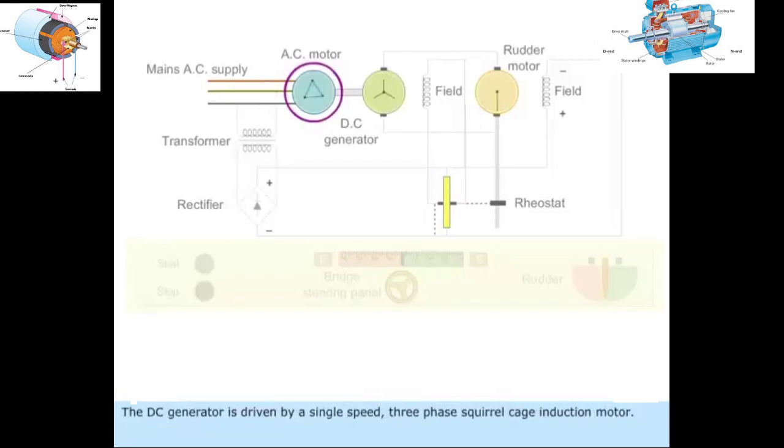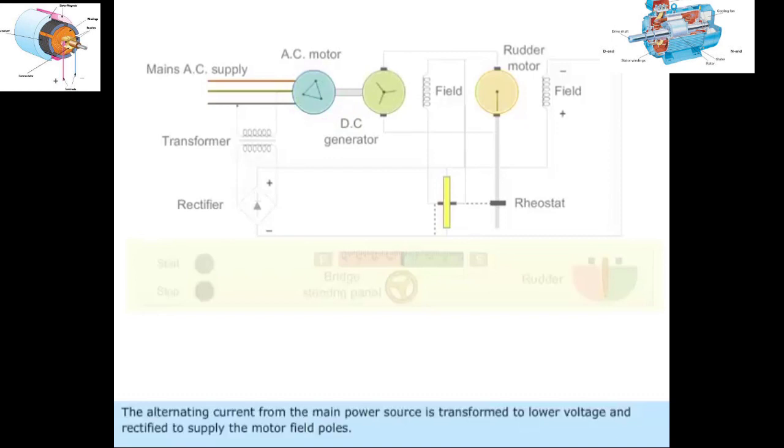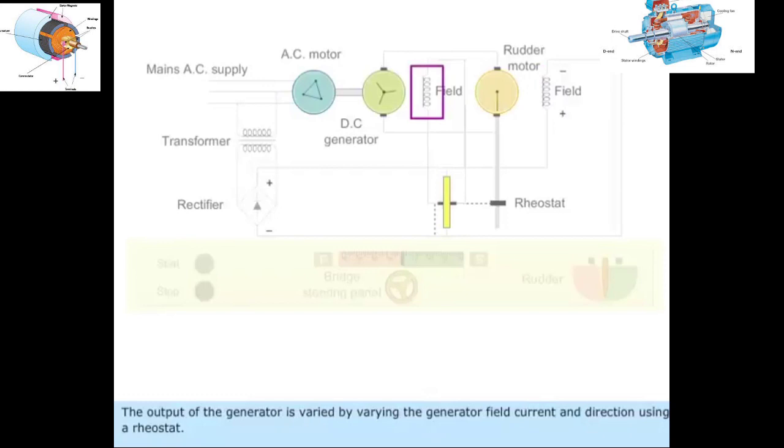The DC generator is driven by a single speed three-phase squirrel cage induction motor. The alternating current from the main power source is transformed to low voltage and rectified to supply the motor field coils. The output of the generator is varied by varying the generator field current and direction using a rheostat.